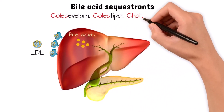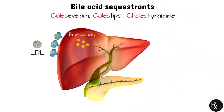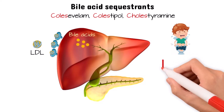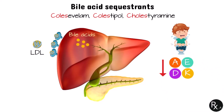Colesevelam, colestipol, and cholestyramine are some examples of medications in this class. There are some side effects restricted to the GI system, such as nausea, flatulence, and constipation. These agents may also interfere with the absorption of fat-soluble vitamins by decreasing their absorption and by forming insoluble complexes with other medications such as digoxin and warfarin.